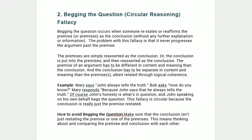Example: Mary says, 'John always tells the truth.' Bob asks, 'How do you know?' Mary responds, 'Because John says he always tells the truth.' Of course, John's honesty is what's in question, and John speaking on his own behalf begs the question. This fallacy is circular because the conclusion is really just the premise restated. How to avoid it: make sure that the conclusion isn't just restating the premise, by thinking about and comparing the premise and conclusion with each other.